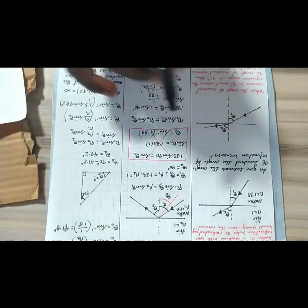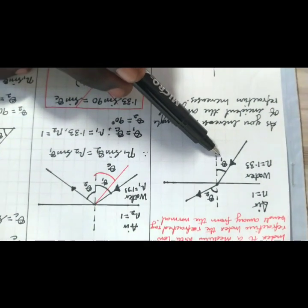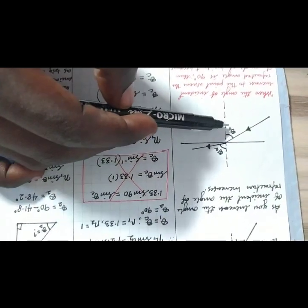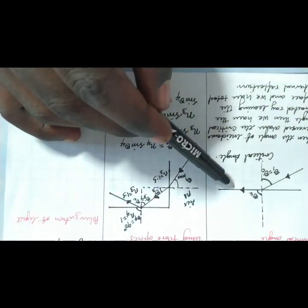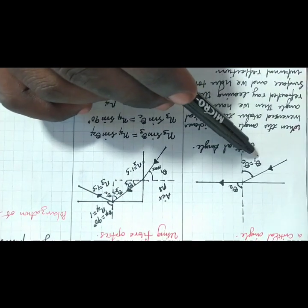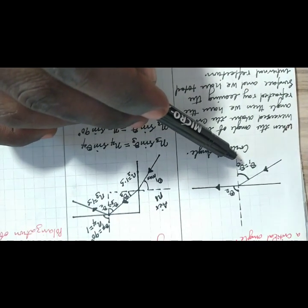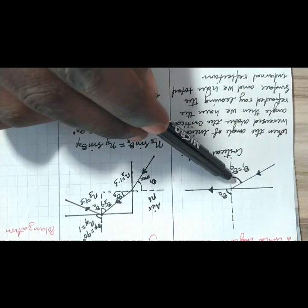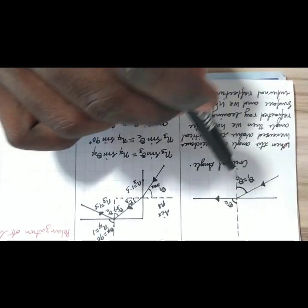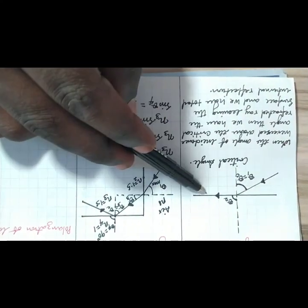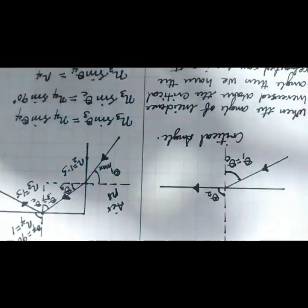Now, if I start increasing the angle of incidence, theta 1, then theta 2 also starts increasing. If I increase theta 1 to the point where theta 2 becomes equal to 90 degrees, then theta 1 becomes the critical angle. The critical angle is the angle of incidence that makes the angle of refraction equal to 90 degrees.